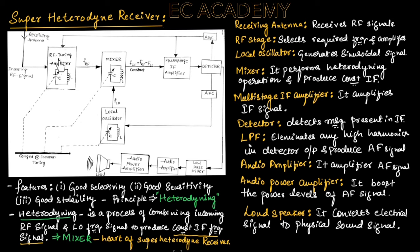The RF stage selects the frequency from the incoming RF signal and amplifies the selected RF signals to the required amplitude level for further processing. The local oscillator generates a sinusoidal signal having frequency FL naught. The output of the RF tuning and amplifier circuit will be FRF.